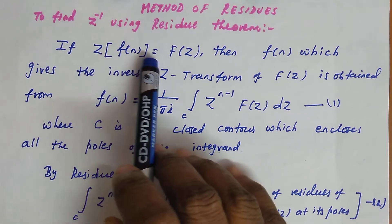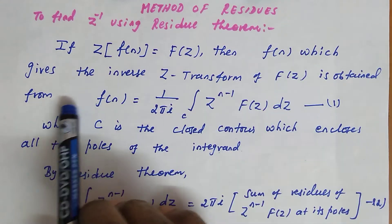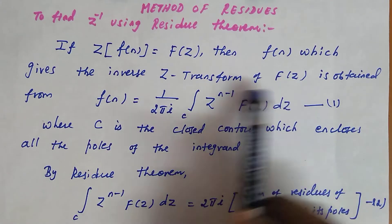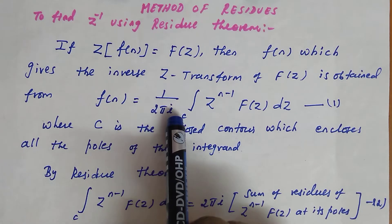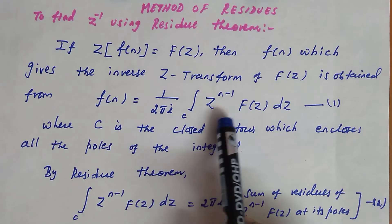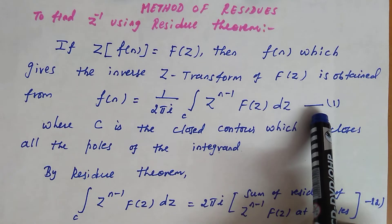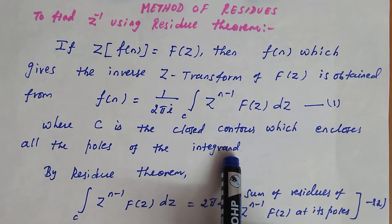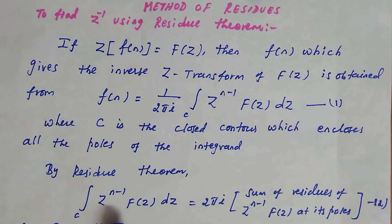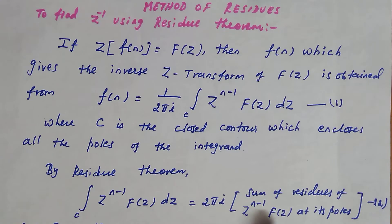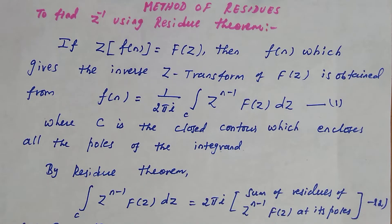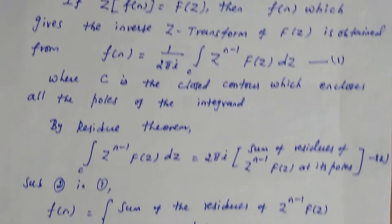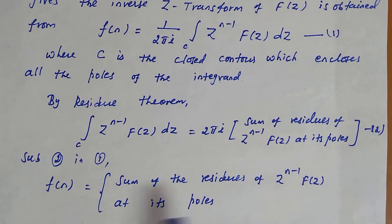If Z of F(n) equals F(z), then F(n), which gives the inverse Z-transform of F(z), is obtained from the result: F(n) = (1/2πi) ∮_C z^(n-1) F(z) dz, where C is the closed contour enclosing all the poles of the integrand. By the residue theorem, ∮_C z^(n-1) F(z) dz = 2πi × sum of residues of z^(n-1) F(z) at its poles. Substituting, F(n) equals the sum of residues of z^(n-1) F(z) at its poles.